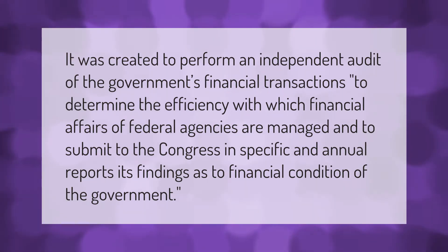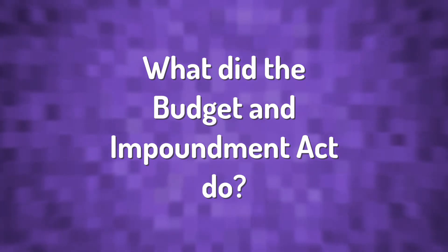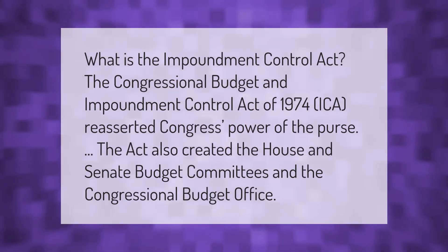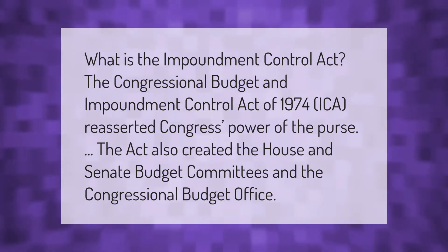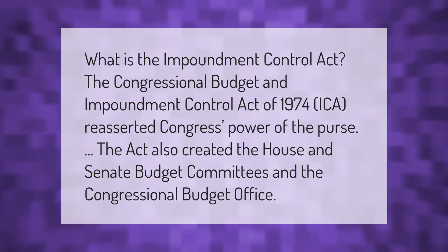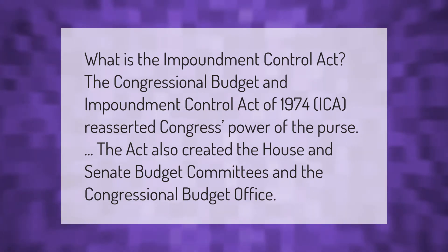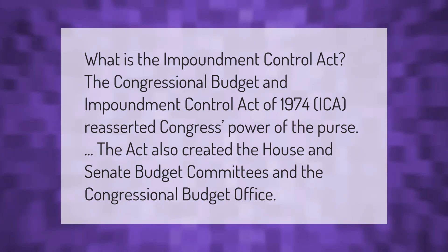What is the Impoundment Control Act? The Congressional Budget and Impoundment Control Act of 1974 (ICCA) reasserted Congress's power of the purse. The act also created the House and Senate Budget Committees and the Congressional Budget Office.